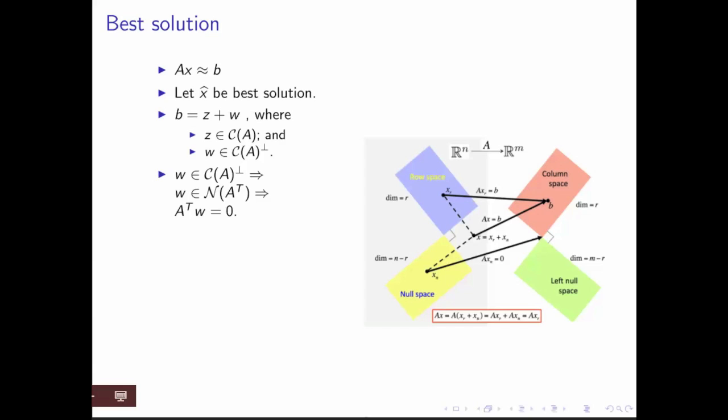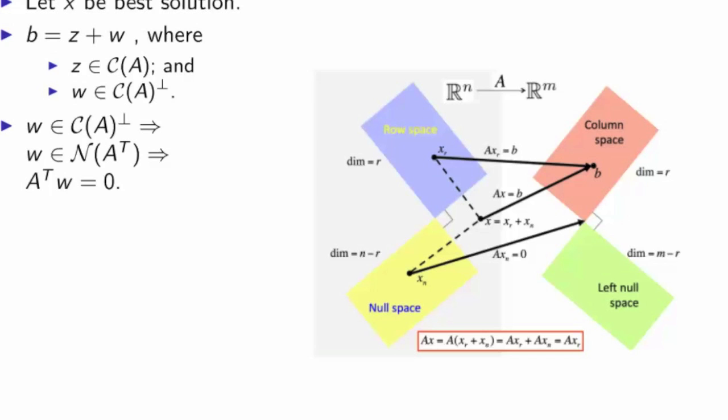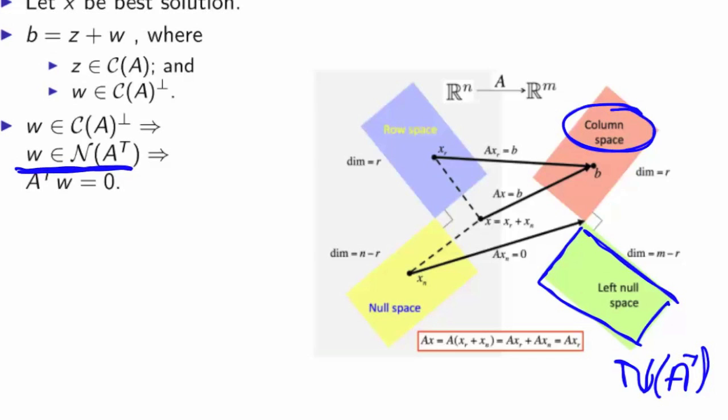Now this is where this picture that told us about the fundamental spaces comes in. We know that we can solve for vectors that are in the column space of A. We know that the subspace perpendicular to that is the left null space. And we also saw that that was the same as the null space of A transpose.